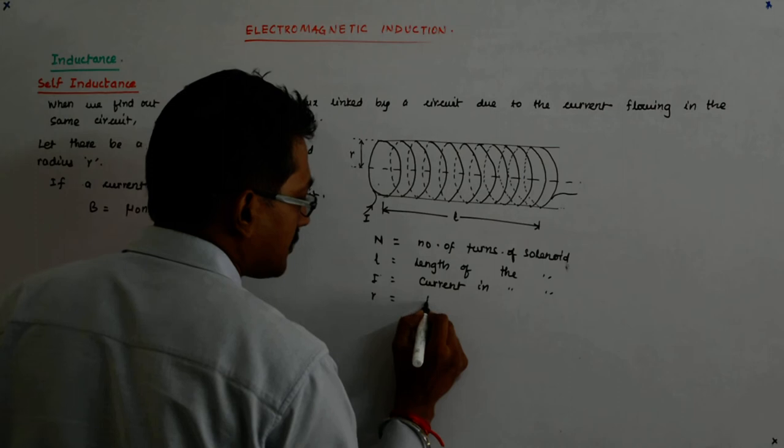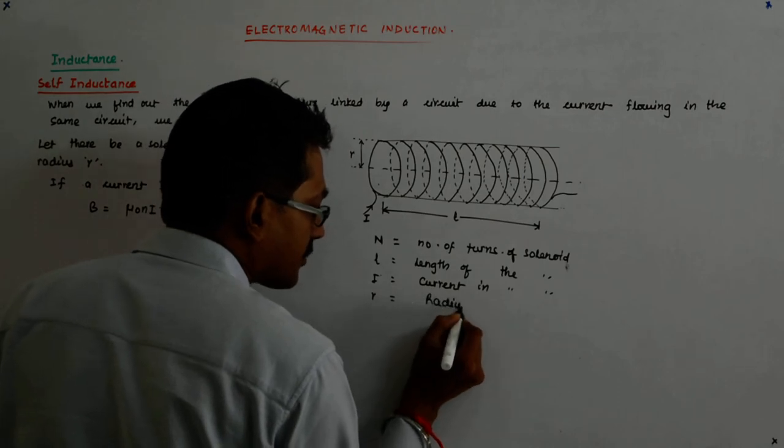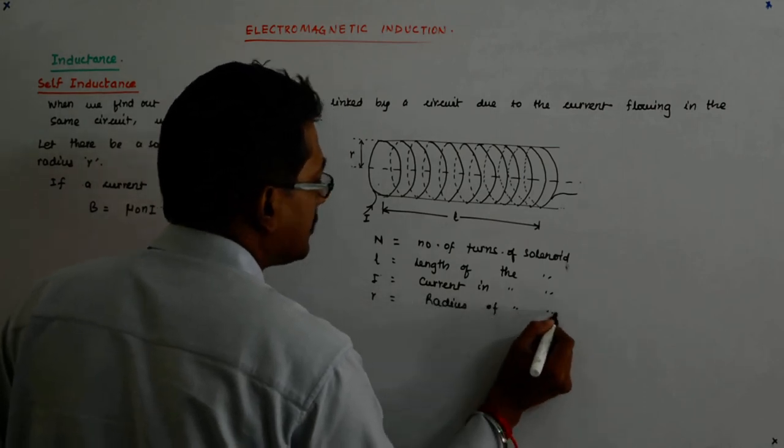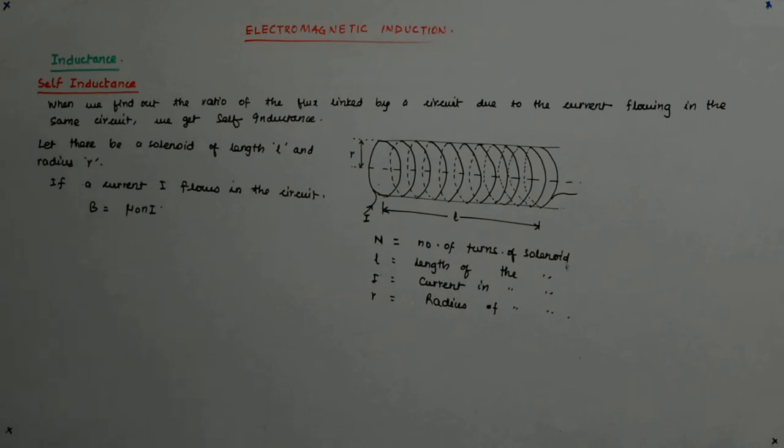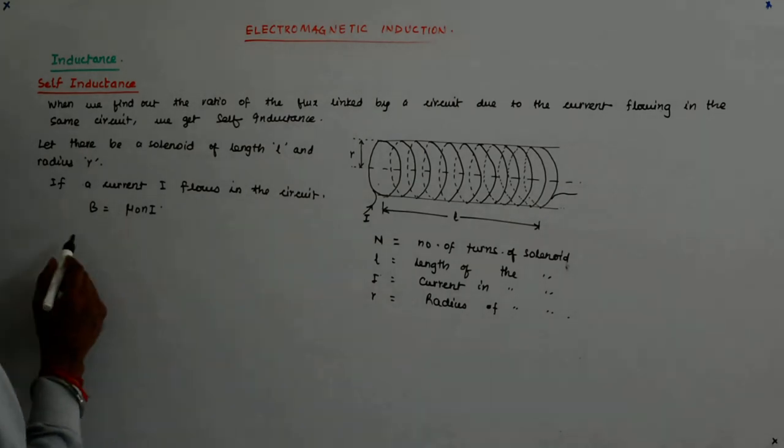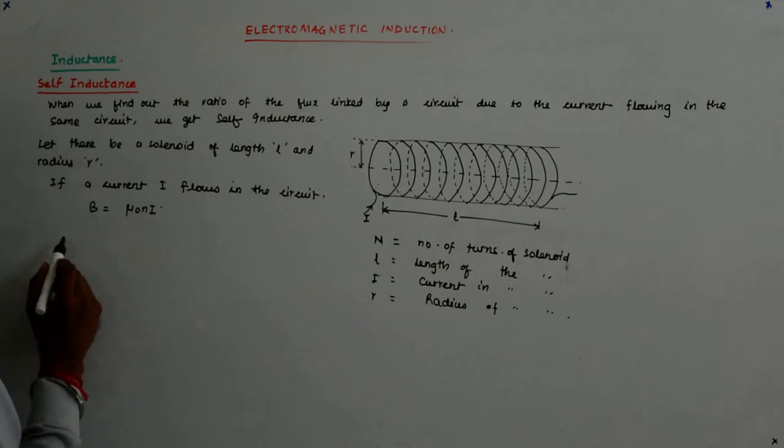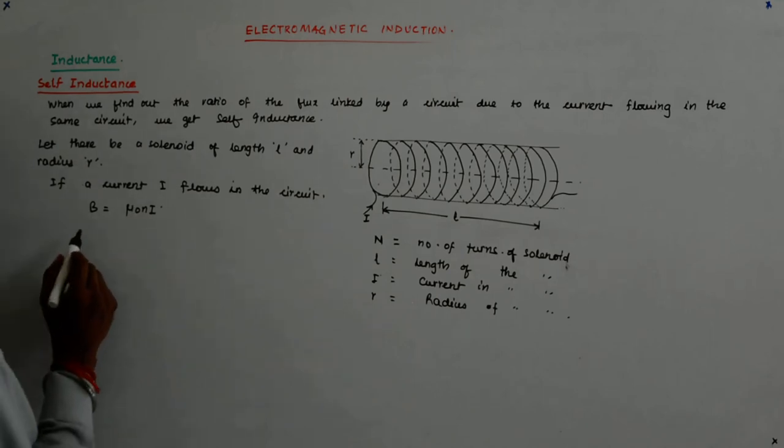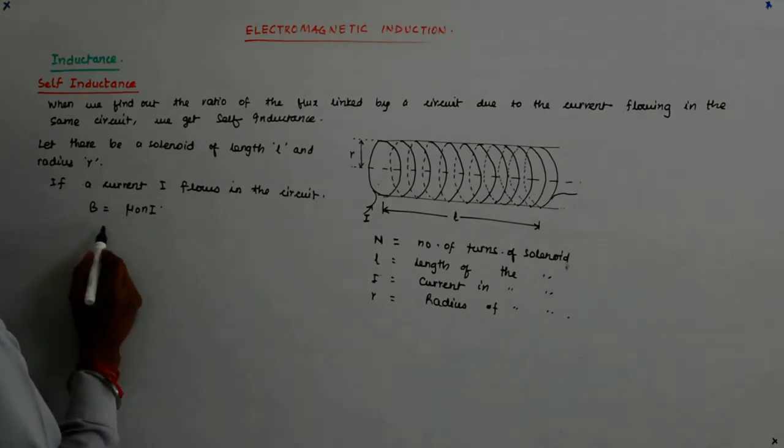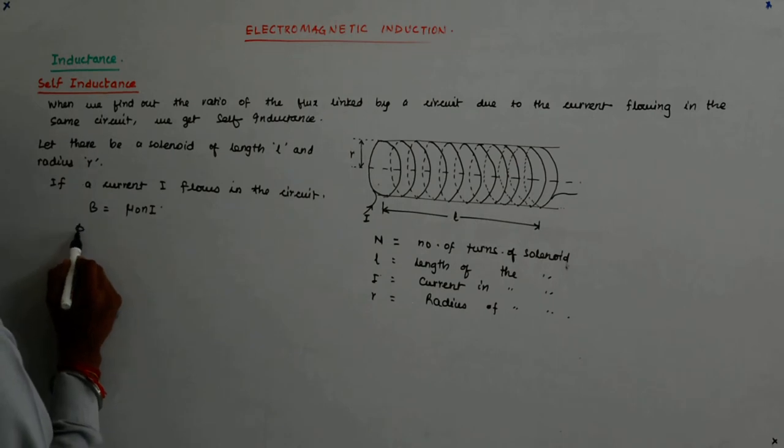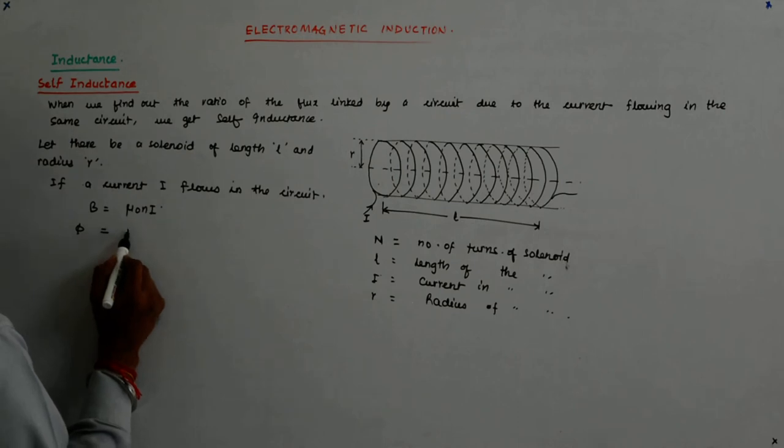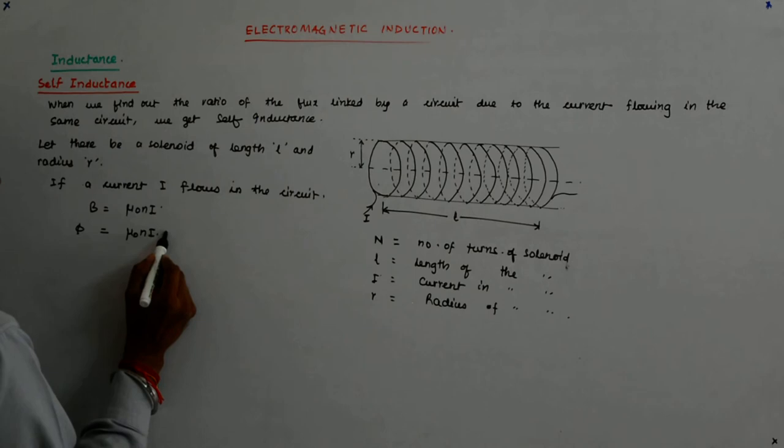And R is the radius of the solenoid. Now if a current I flows in the circuit, then B equals μ₀NI/L. Due to that, what is the flux? Flux equals μ₀NI/L into A.